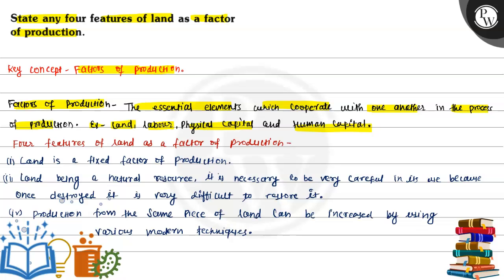So these are the essential elements that cooperate with each other in the process of production. Basically there are four factors of production: the first is land, the second is labor, the third is physical capital, and the fourth is human capital. Now let us see the four features of land as a factor of production.